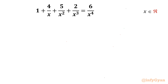Welcome to Infigyan friends. Today in this video we are going to take up another challenging question from rational equations. The equation is 1 plus 4 over x plus 5 over x squared plus 2 over x cubed equal to 6 over x to the power 4. We have to find out real solutions only.